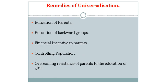Now, remedies for universalization of elementary education. First: Education of the parents. Illiteracy of the masses is a great hurdle in the expansion of elementary education. Unless the parents are educated, they will not cooperate with the authorities. Number 2: Education of backward groups. Expansion of education has to be planned with reference to the underprivileged and most backward sections of society. Facilities for educating the children of backward groups like the scheduled castes, nomads, or tribal people should be increased.